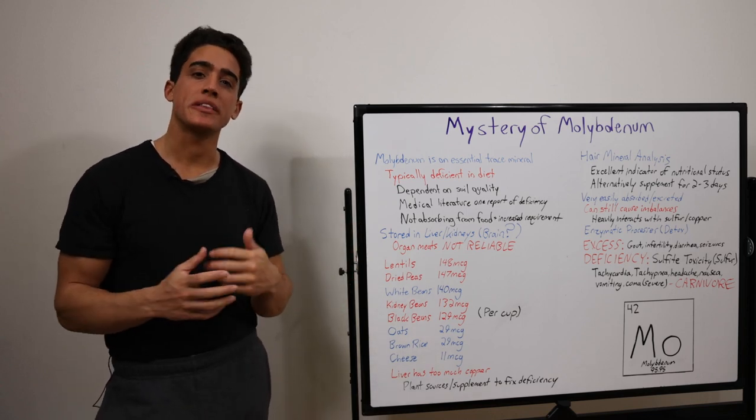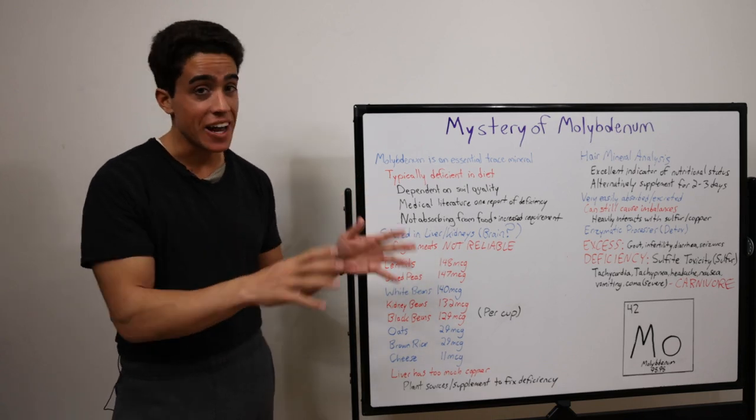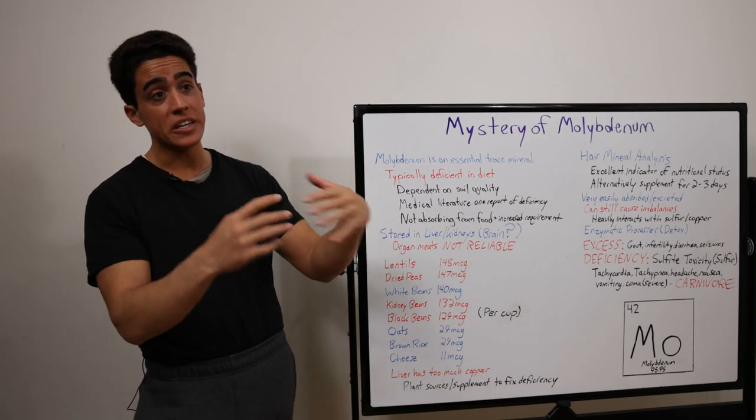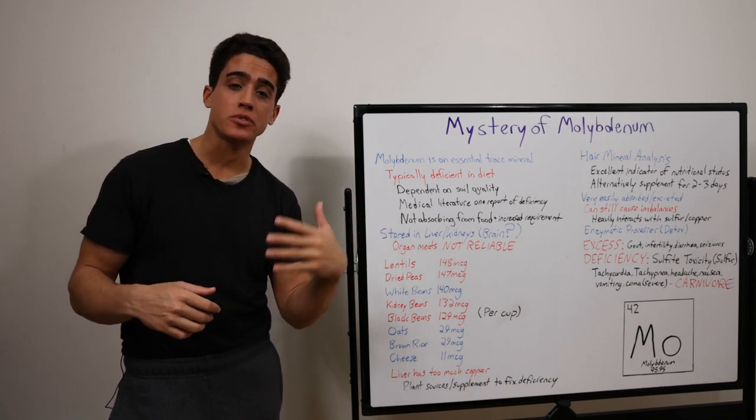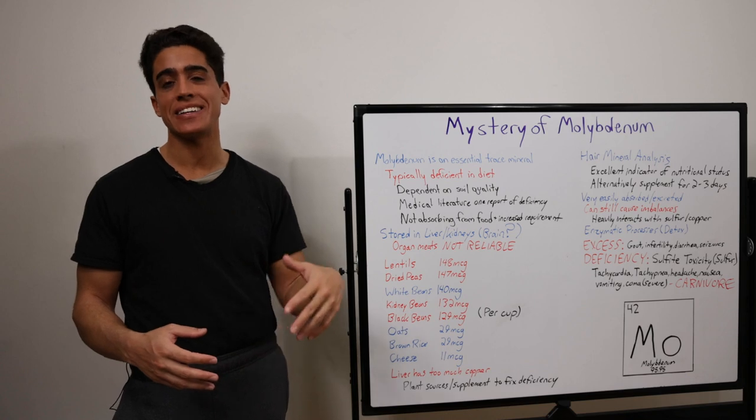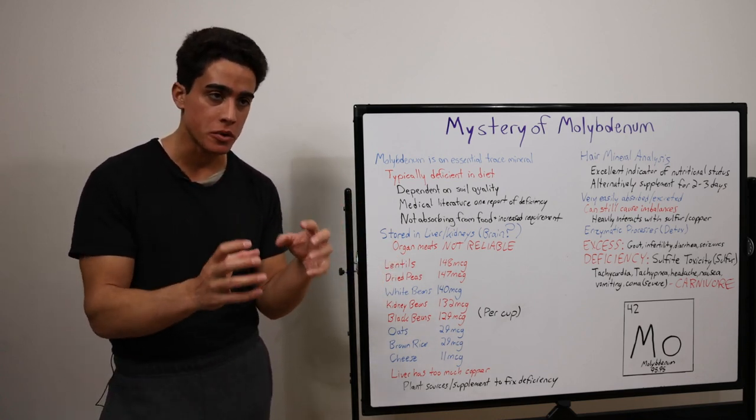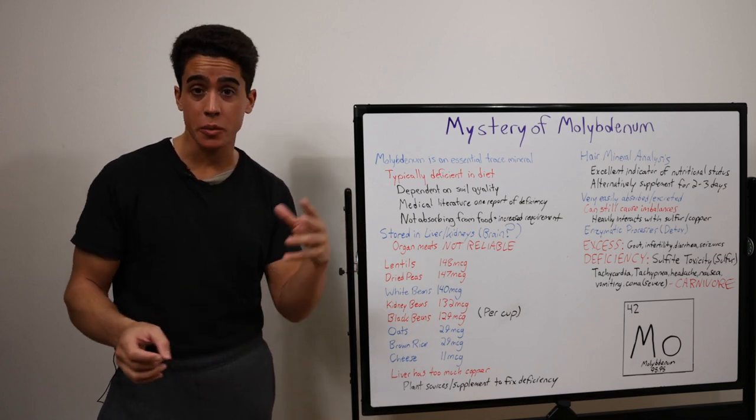So molybdenum is stored in the liver and kidneys. And you might be thinking, can I eat animal organs? Because hypothetically, if we store it there, do the animals store it there? And the answer is no, because of synergistic and antagonistic minerals, mainly copper. You're getting an incredible amount of copper with that molybdenum.